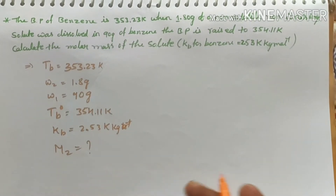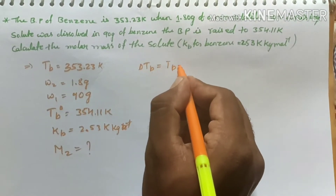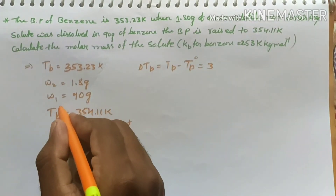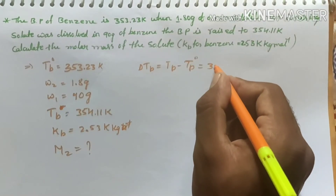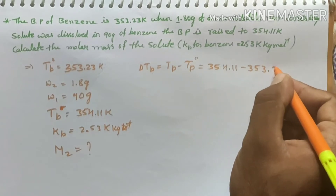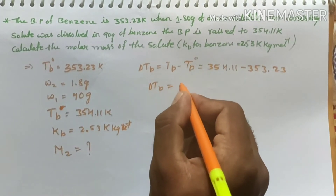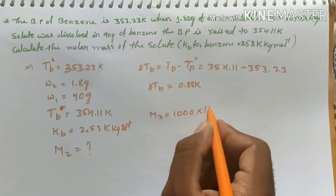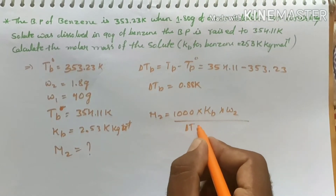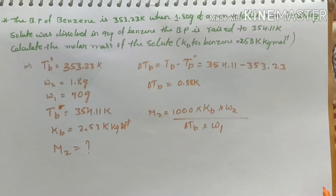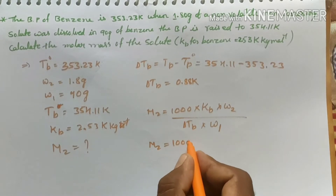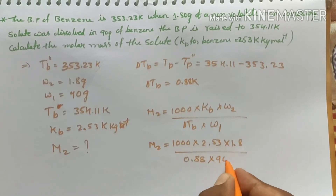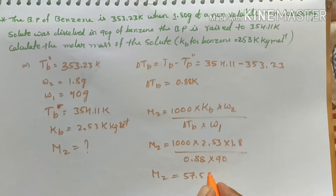This is a fixed question that appears every year, so practice it well. First find delta Tb: delta Tb = Tb − Tb° = 354.11 − 353.23 = 0.88 kelvin. Then using the formula M2 = (1000 × kb × w2) / (delta Tb × w1): M2 = (1000 × 2.53 × 1.8) / (0.88 × 90) = 57.5 gram per mole.